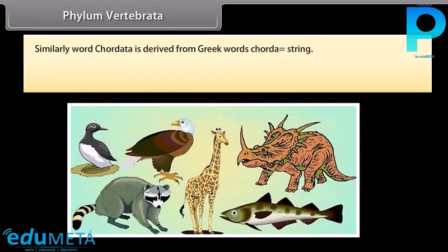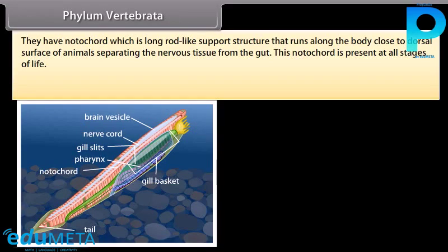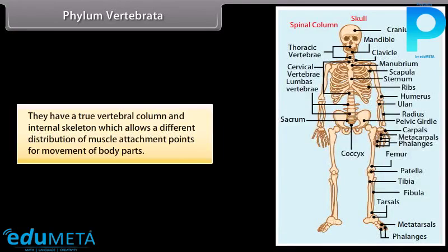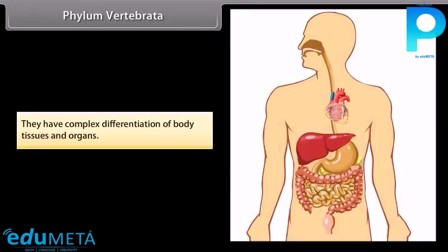Phylum Vertebrata: the word chordata is derived from Greek word chorda, meaning string. The animals are bilaterally symmetrical, triploblastic, coelomic, and segmented with complex differentiation of body tissues and organs. They have a notochord — a long rod-like support structure running along the body close to the dorsal surface — separating the nervous tissue from the gut. This notochord is present at all stages of life. They have a dorsal tubular nerve cord, paired gill pouches at some stages, a true vertebral column, and an internal skeleton allowing complex muscle attachment and movement.